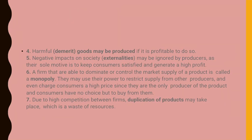Fourth, harmful or demerit goods may be produced if it is profitable to do so. Fifth, negative externalities may be ignored by producers as their sole motive is profit, not societal benefit. Sixth, a firm that dominates market supply is known as a monopoly — they prevent competition and charge consumers high prices, leaving consumers with no choice. Seventh, due to high competition, duplication of products may occur, causing wastage of resources.